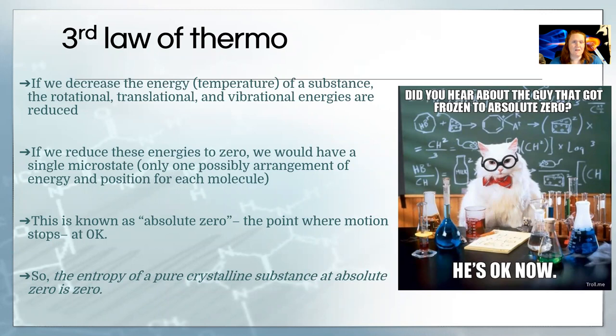That means we would have a single microstate. Everything exists in only one position with only one energy. Entropy is zero at that point because ln of one is zero. So entropy would be zero. We call that absolute zero because it's the lowest temperature anything can go. It actually can't get there, but we thought it could.